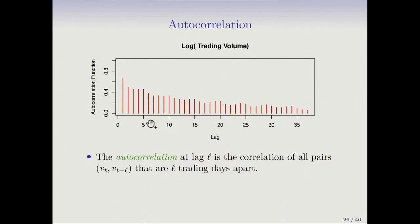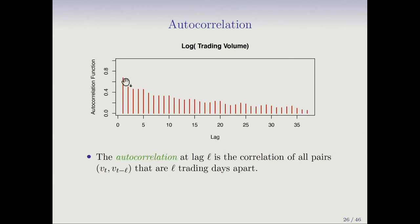Here's the log trading volume. What we're showing is what's known as an autocorrelation function at different lags. V is the variable for log trading volume, and we look at pairs Vt and Vt minus L — meaning they're at a lag of L trading days apart. We take all such pairs and compute the correlation of those pairs of numbers; that's called the autocorrelation at lag L. The log trading volume has a correlation of 0.7 between values today and values yesterday — that's lag 1.